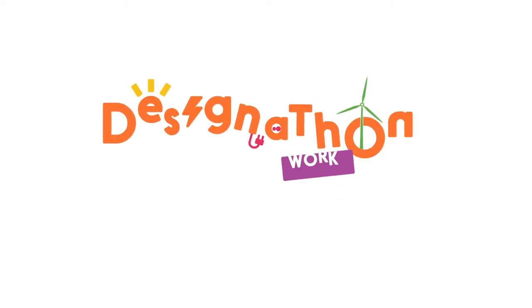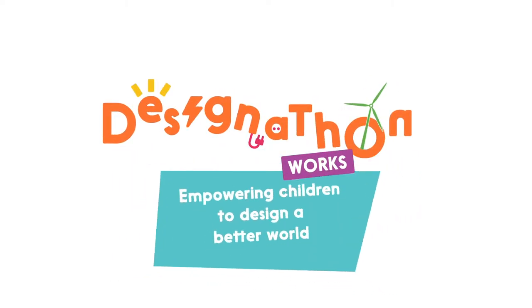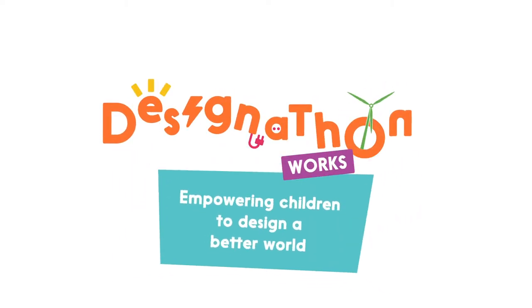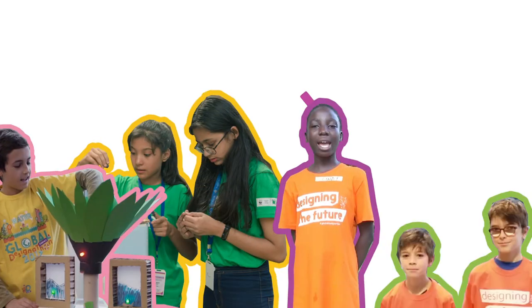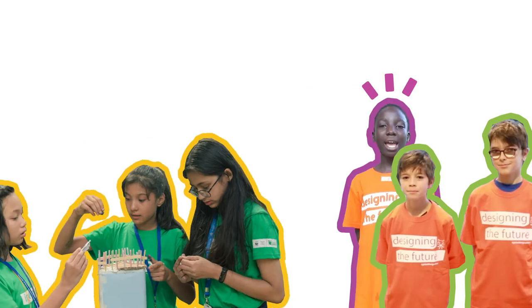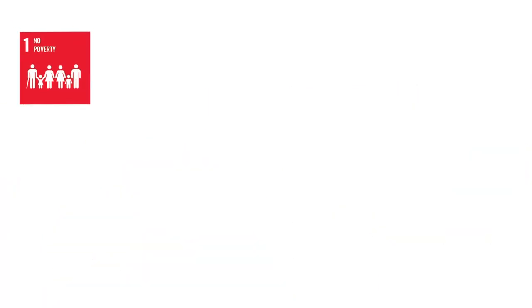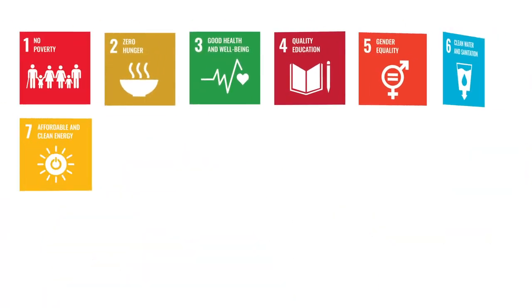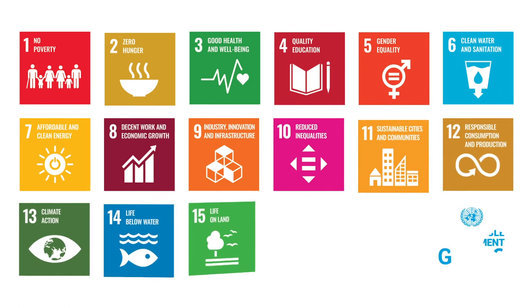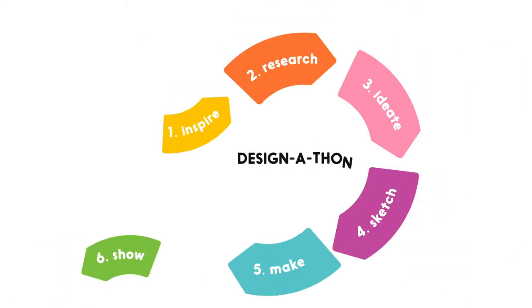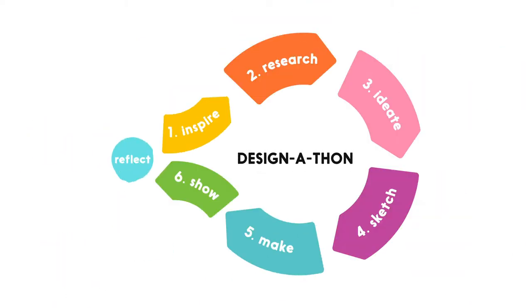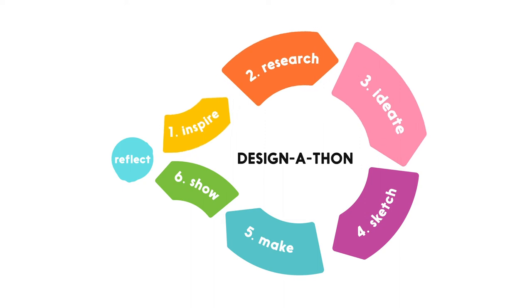Welcome to the design-a-thon method explanation video. A design-a-thon is a structured workshop for children aged 8 to 12 years. In this workshop, the children learn to design, make, and present their solutions to one of the sustainable development goals, the SDGs. Your role as facilitator is to guide and motivate this creative process using the following seven steps.